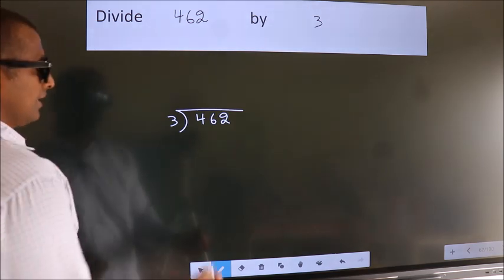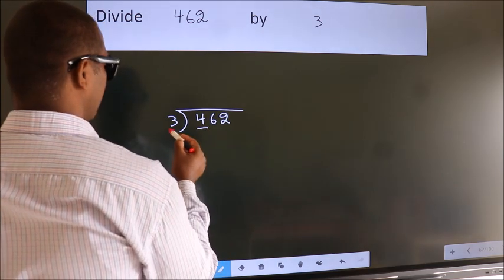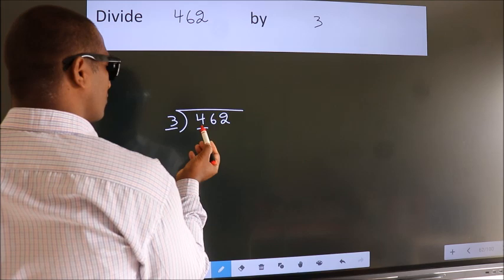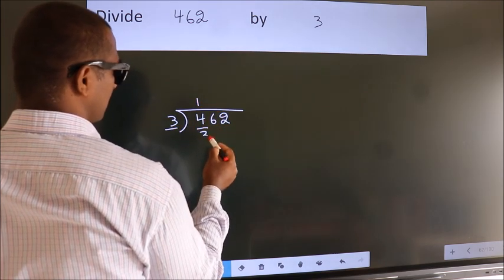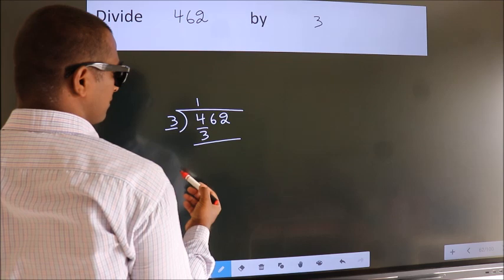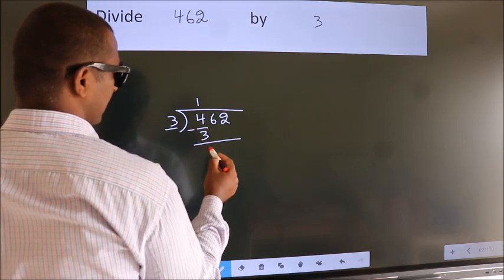Next. Here we have 4, here 3. A number close to 4 in the 3 table is 3 1s 3. Now, we should subtract. We get 1.